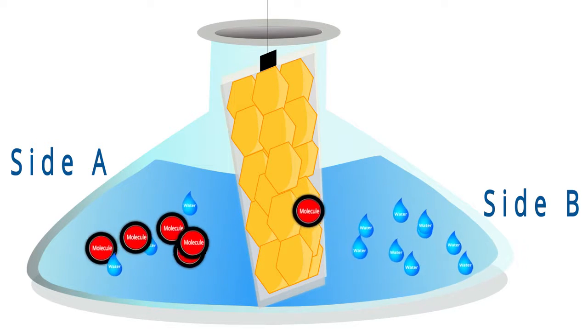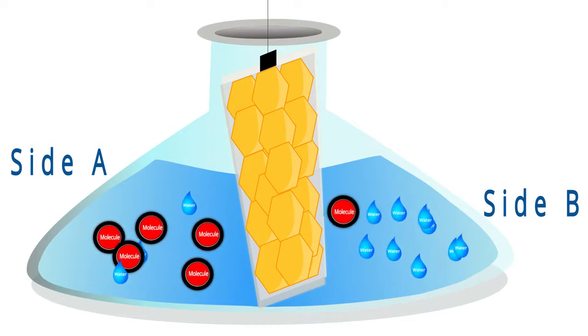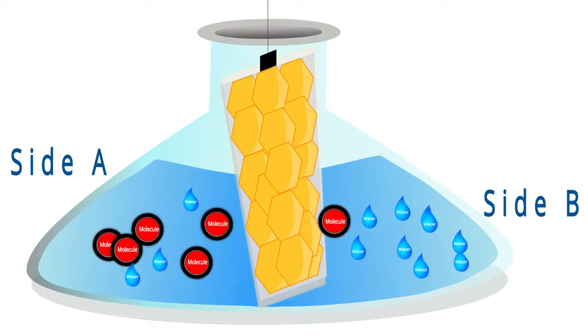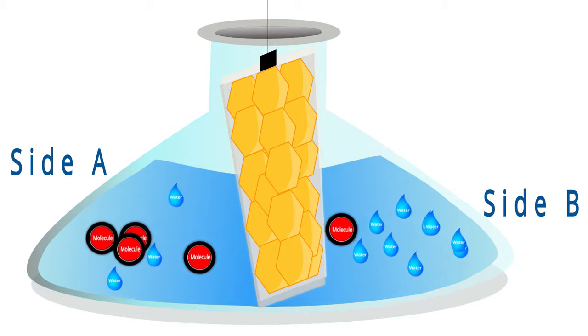Because there are more molecules moving on side A, there are also more collisions, so more particles move from A to B than from B to A.